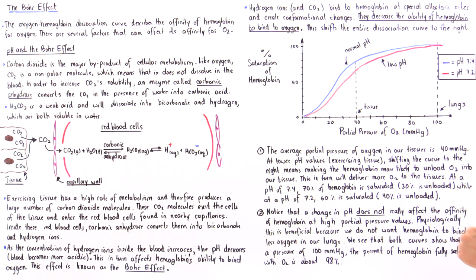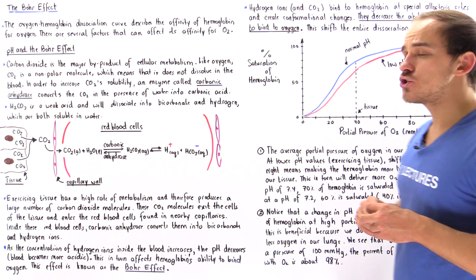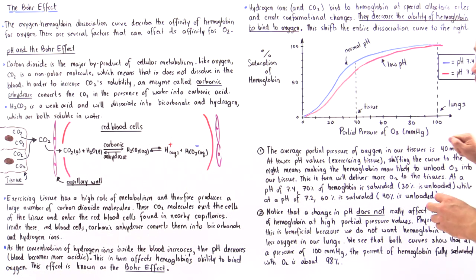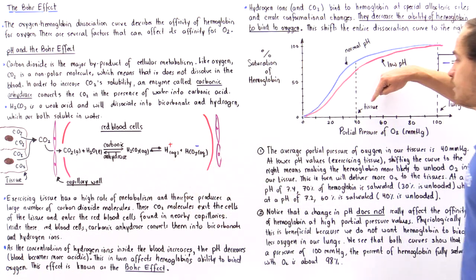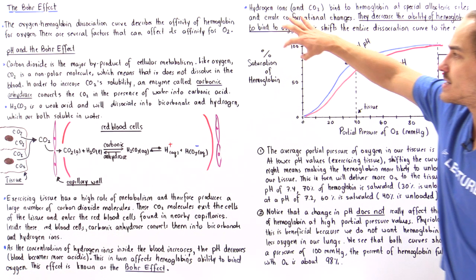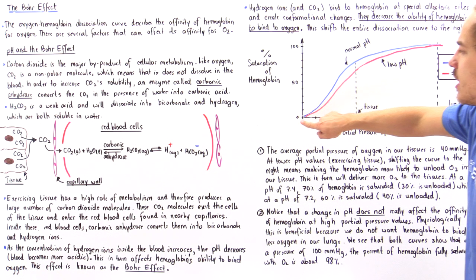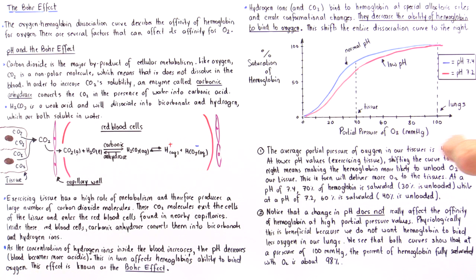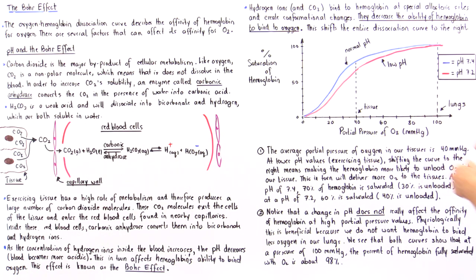Looking at the diagram, the y-axis shows percent saturation of hemoglobin — the percent of hemoglobin fully saturated with oxygen, ranging from 0% to 100%. The x-axis shows partial pressure of oxygen in surrounding tissue in millimeters of mercury, ranging from 0 to about 100 mmHg. At 100 mmHg we are in the lungs, and at 40 mmHg we are in the tissue.